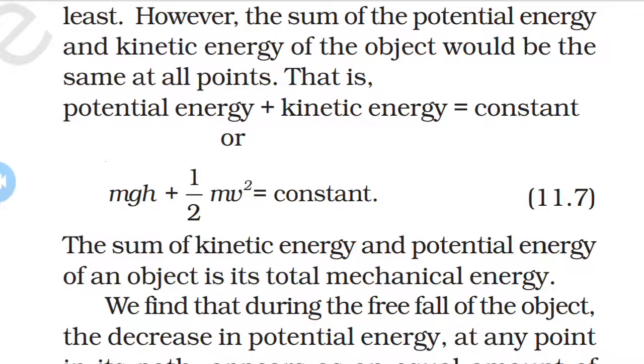So potential energy mgh plus kinetic energy one-half mv squared equals constant. The sum of kinetic energy and potential energy of an object is its total mechanical energy.